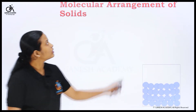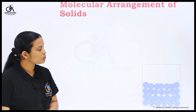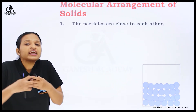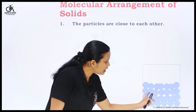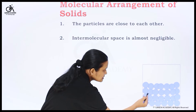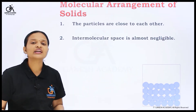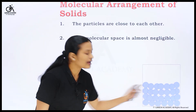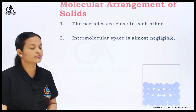In case of solids, the molecular arrangement is such that the solid particles are very close to each other. The particles are very, very close to each other, and that's why the space available between them is very negligible. This gap between particles is called intermolecular space, and that intermolecular space is comparatively negligible because particles are very close to each other — there is least intermolecular space available.